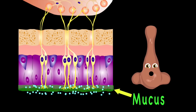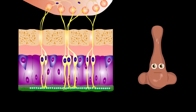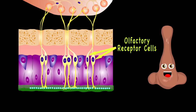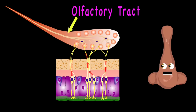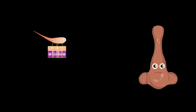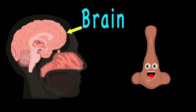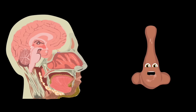When odor molecules reach the back of your nose, they get stuck to a layer of mucus where they start to dissolve. That's where they bind to the olfactory receptor cells, then the signal is made and sent through the olfactory tract. Your brain receives the info and deciphers the signals, and tells your body whether it is good or whether it should go.